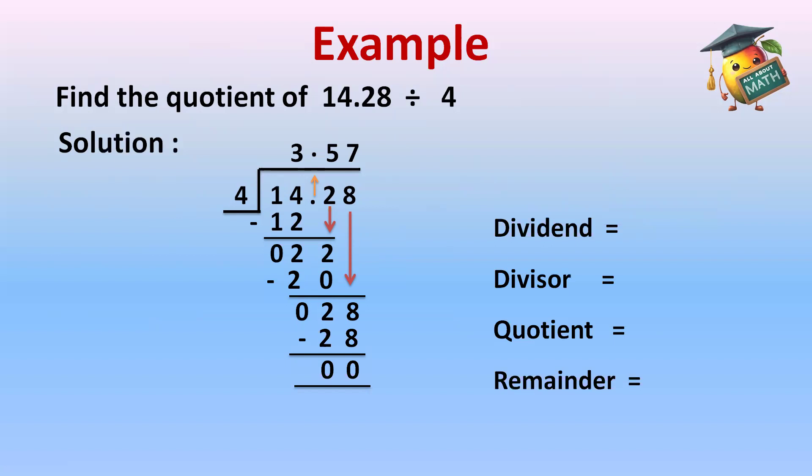And we have dividend 14.28, divisor 4, quotient which is our answer 3.57, and the remainder is 0.